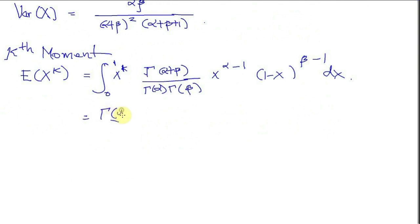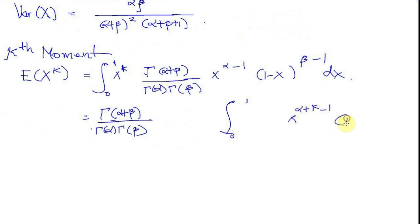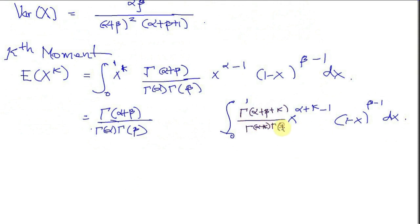That is equal to: I'll take out the gamma functions, which are constants with respect to x — gamma of alpha plus beta divided by gamma of alpha times gamma of beta — times the integral from 0 to 1 of x to the power of alpha plus k minus 1, times 1 minus x to the power of beta minus 1 dx. I can multiply the integrand by gamma of alpha plus beta plus k divided by gamma of alpha plus k times gamma of beta to make it a beta distribution PDF, and take the reciprocal outside the integral: gamma of alpha plus k times gamma of beta divided by gamma of alpha plus beta plus k.